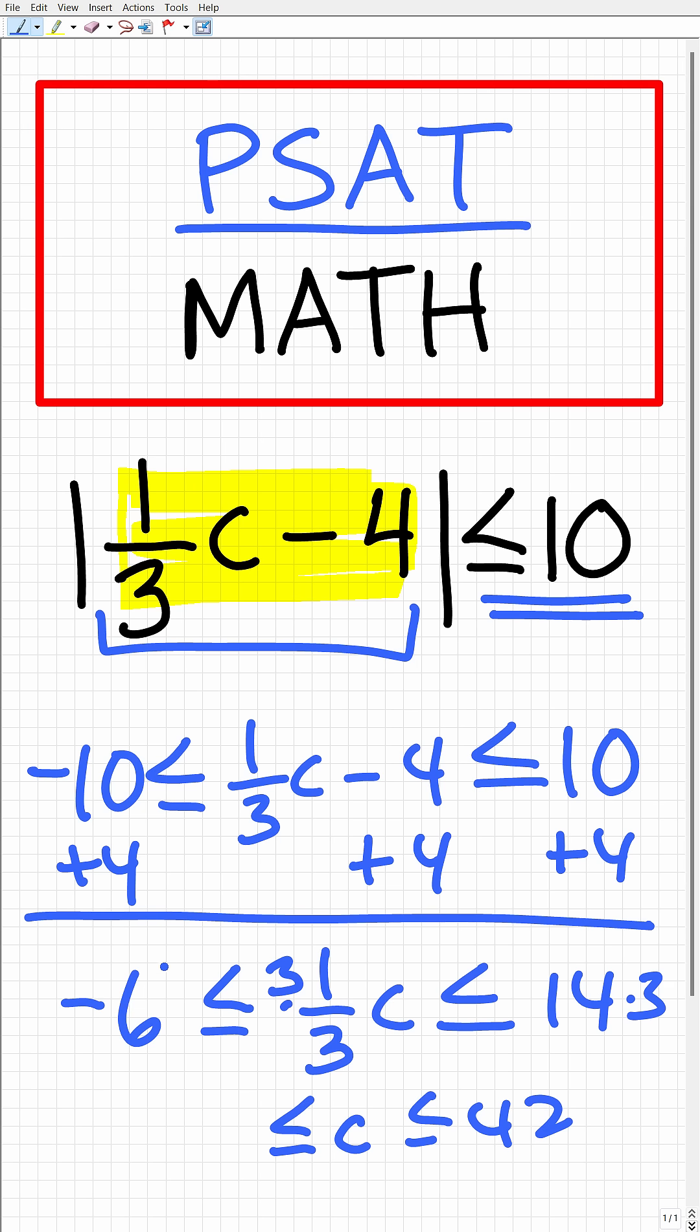And then over here, we'll have 3 times this negative 6. That would be negative 18. So our final answer is negative 18 is less than or equal to C is less than or equal to a positive 42. We'll see you next time.